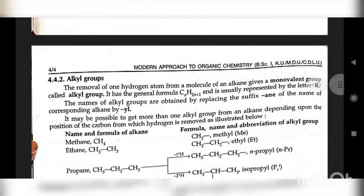Alkyl groups: The removal of one hydrogen atom from a molecule of an alkane gives a monovalent group called an alkyl group. It has the general formula CₙH₂ₙ₊₁ and is usually represented by the letter R. The names of alkyl groups are obtained by replacing the suffix '-ane' of the name of the corresponding alkane with '-yl'. It may be possible to get more than one alkyl group from an alkane depending upon the position of the carbon from which hydrogen is removed.